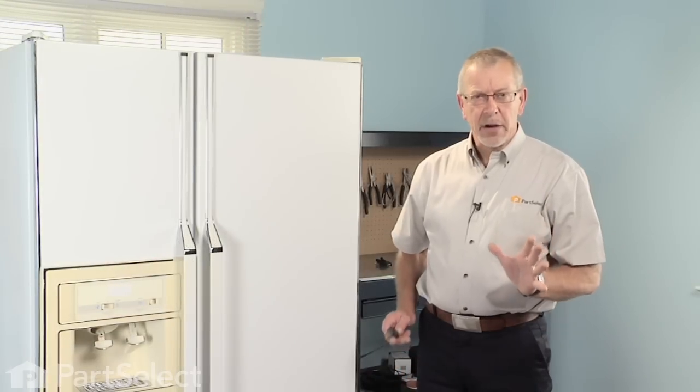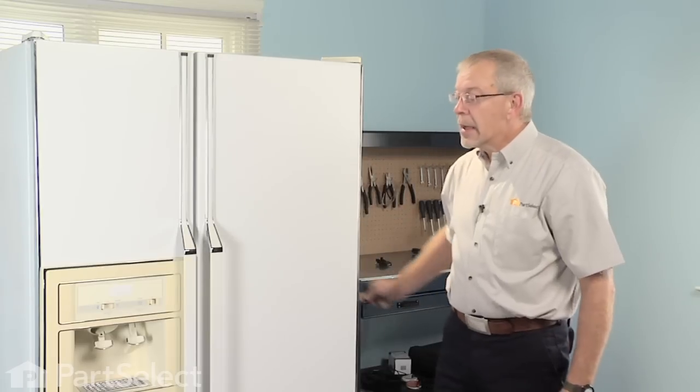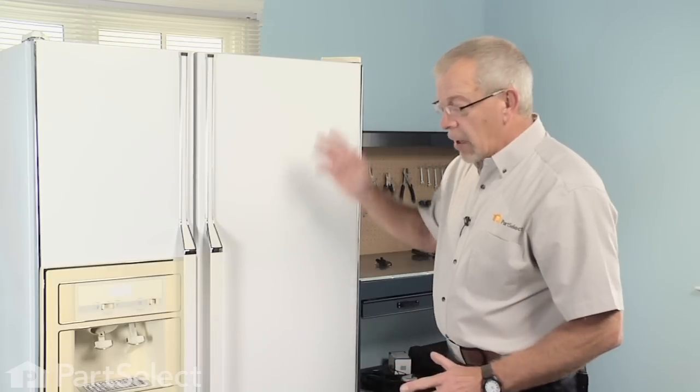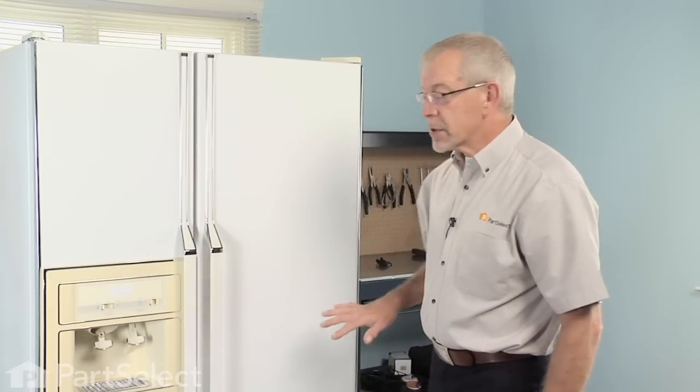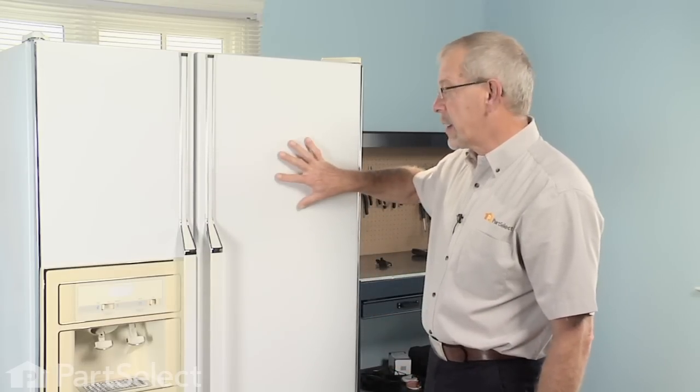Before we begin this repair, the first thing we need to do is disconnect the power supply to the refrigerator and turn off the water supply. We want to empty all the bins on both the fresh food and freezer doors and remove the bins. We're going to take the doors completely off to do this repair.